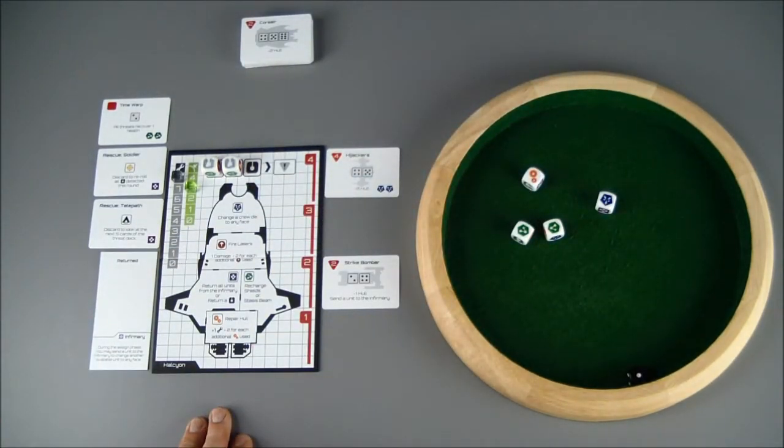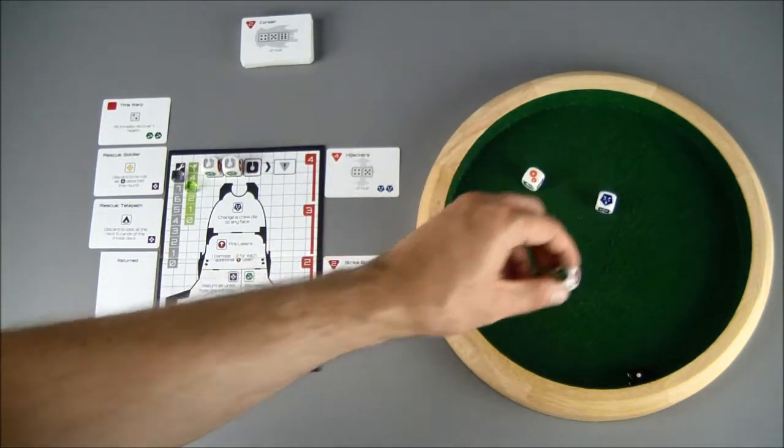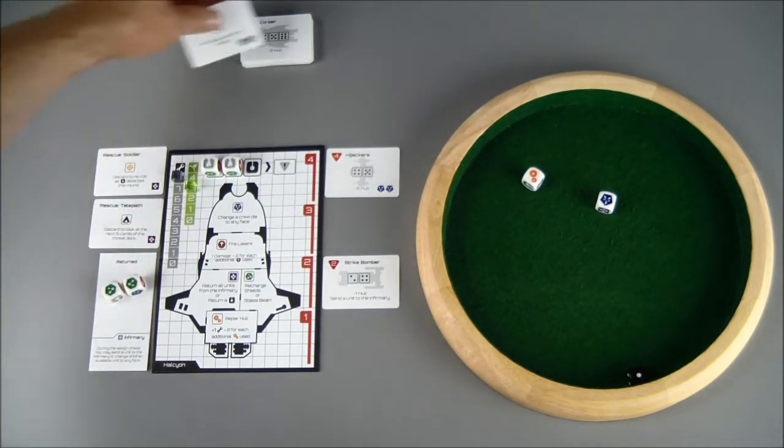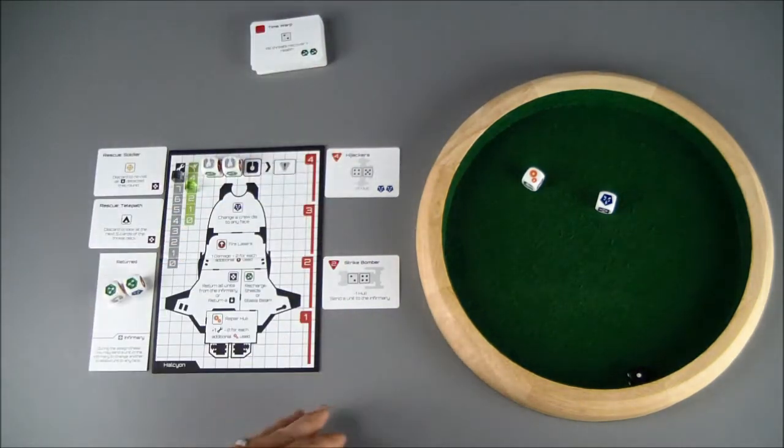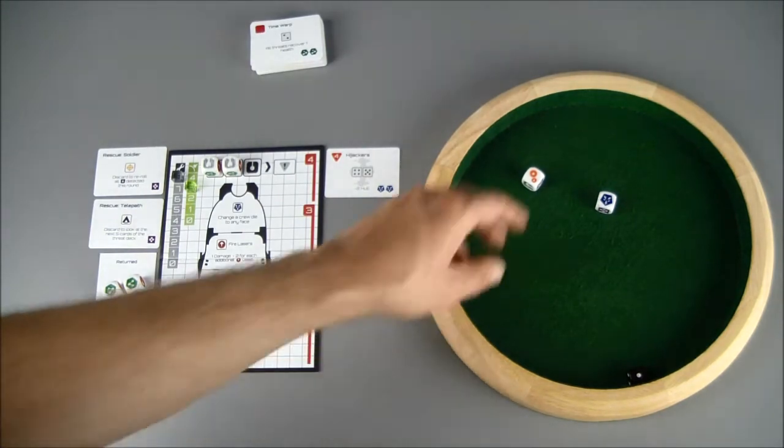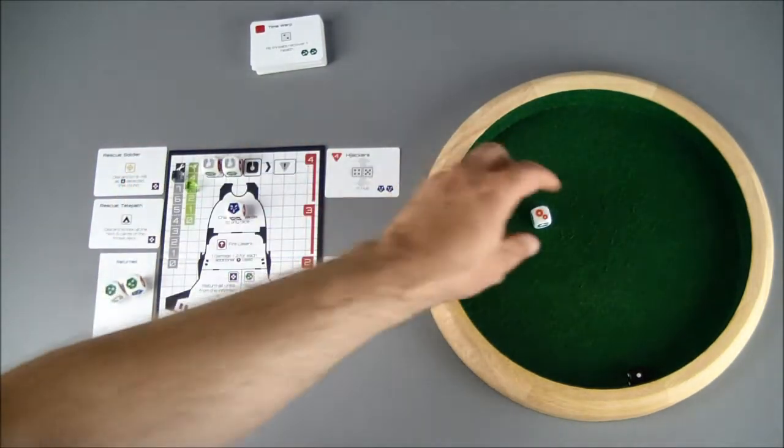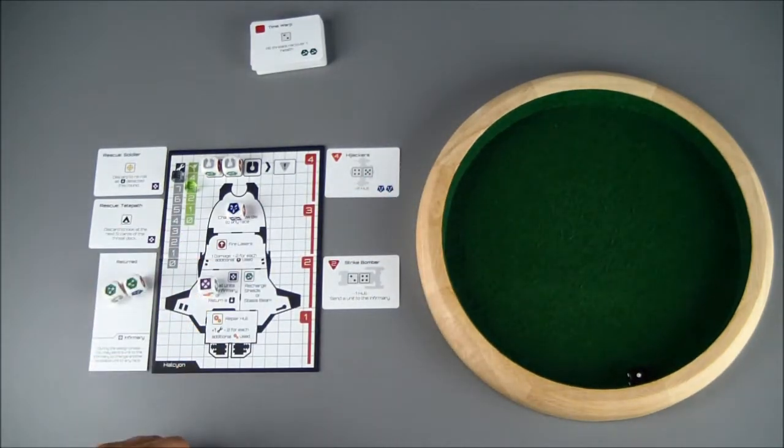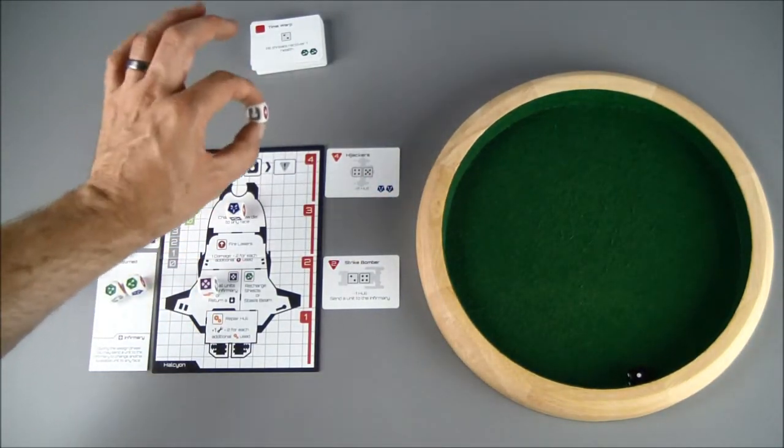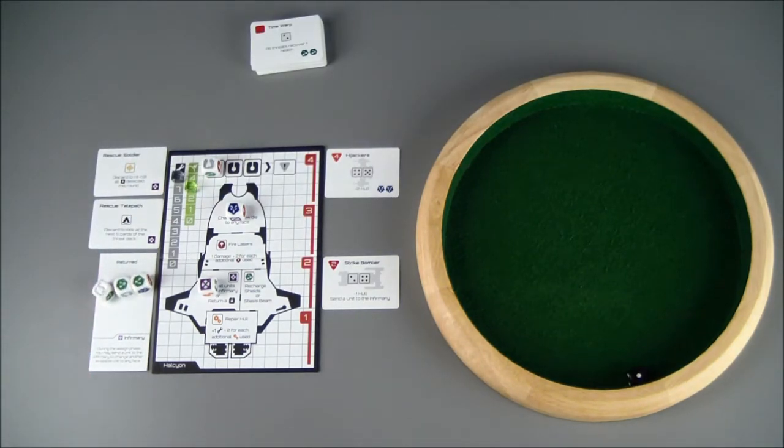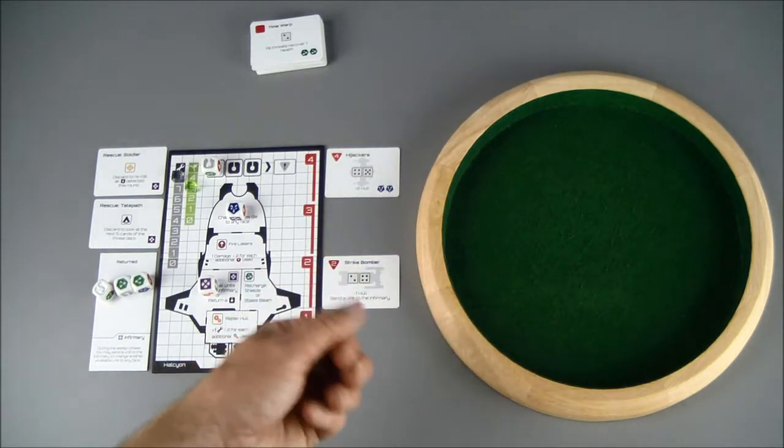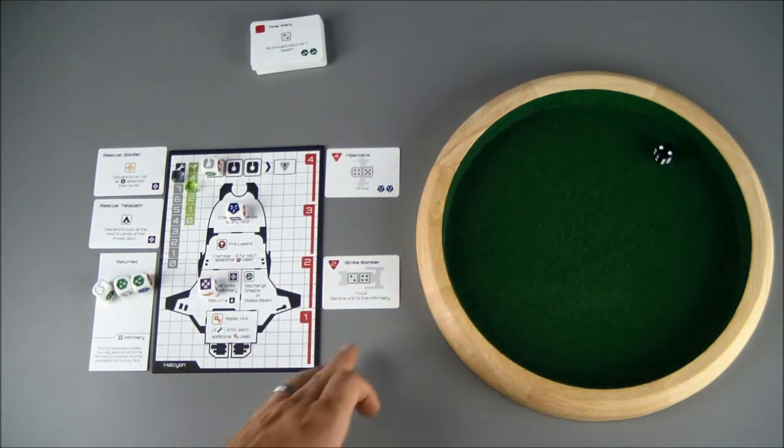So we'll roll our crew members. What are we going to do with these guys? Well, I have two, so we'll take care of the time warp. That way these things can't heal once we start attacking them. And I'll use the commander to turn this into healing, into medical, so we can get one of our crew back. No threat to draw. Go right into the threat phase. Roll a two.